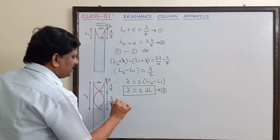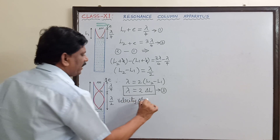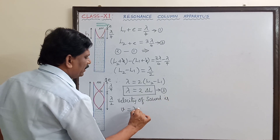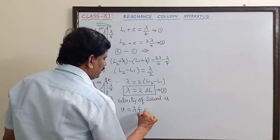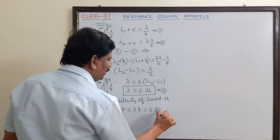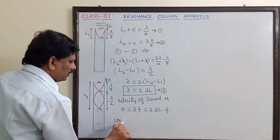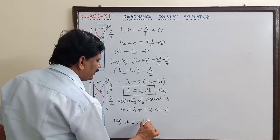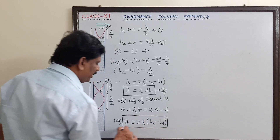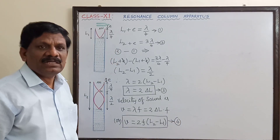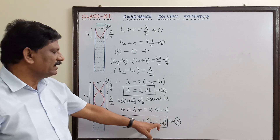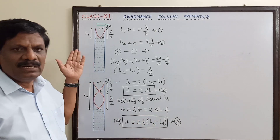The velocity of sound in air is given by V equals lambda times frequency F. Substituting lambda equals 2 times delta L, we get V equals 2 times F times delta L, or velocity equals 2 times frequency times (L2 minus L1). This is the expression used in the practical class to determine the velocity of sound in air, where F is the frequency of the tuning fork and L1, L2 are the two resonating lengths.